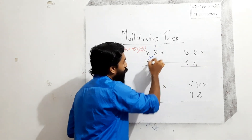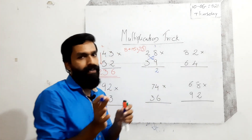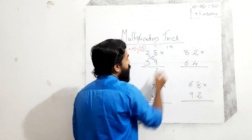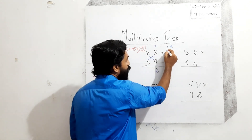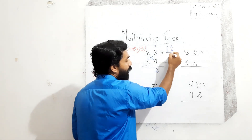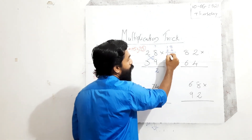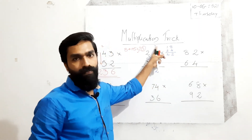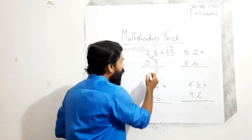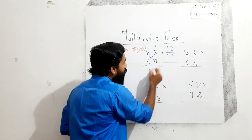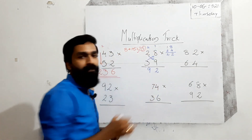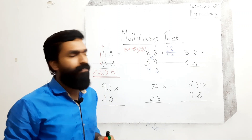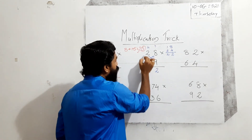Next step: cross multiplication. 2 into 9 is equal to 18, and 3 into 8 is equal to 24. Add these: 18 plus 24 gives us 42. Then 42 plus carry 7 is equal to 49. Write 9 here and 4 is the remainder carry.